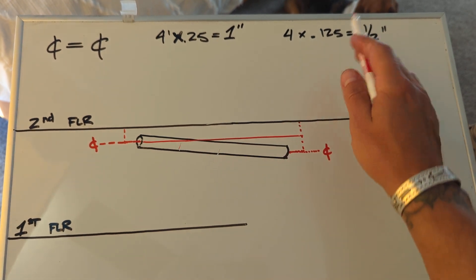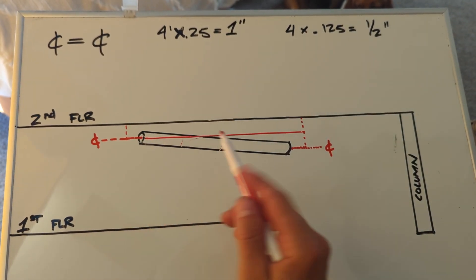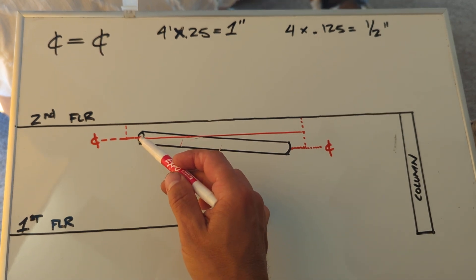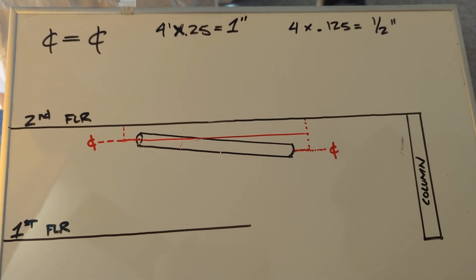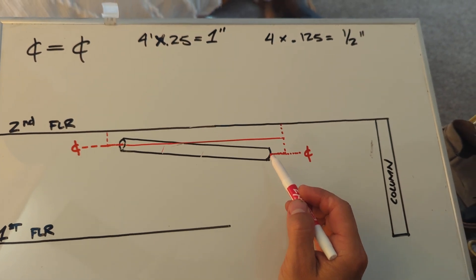So if it was 4 feet at an eighth of an inch, this center, 9 foot would be the start of the bottom of pipe, or let's say center. And then center would be 8 foot 11 and a half over here.